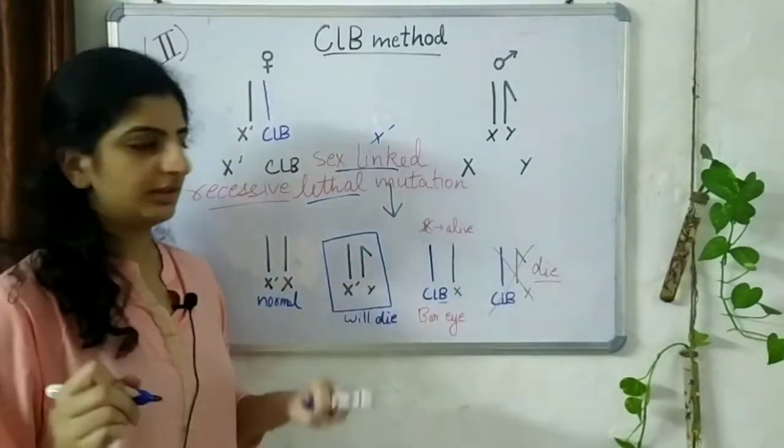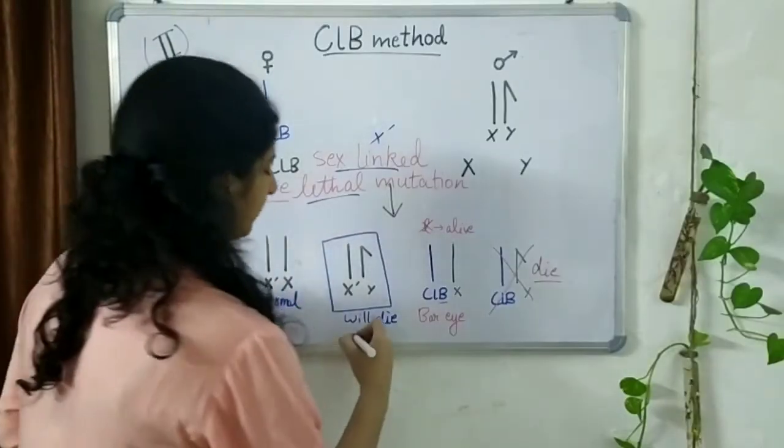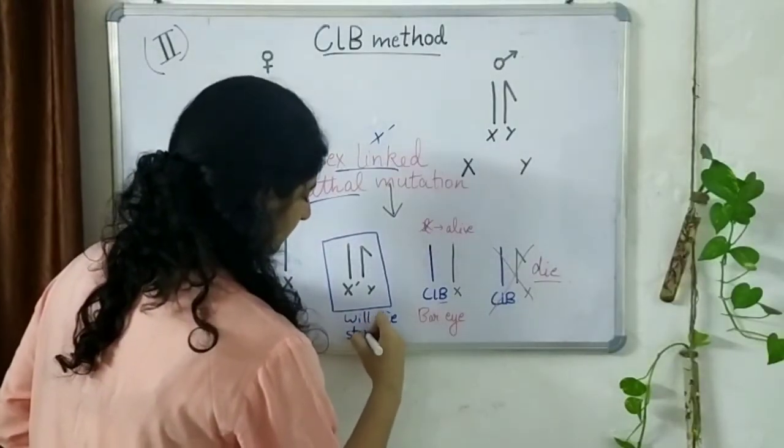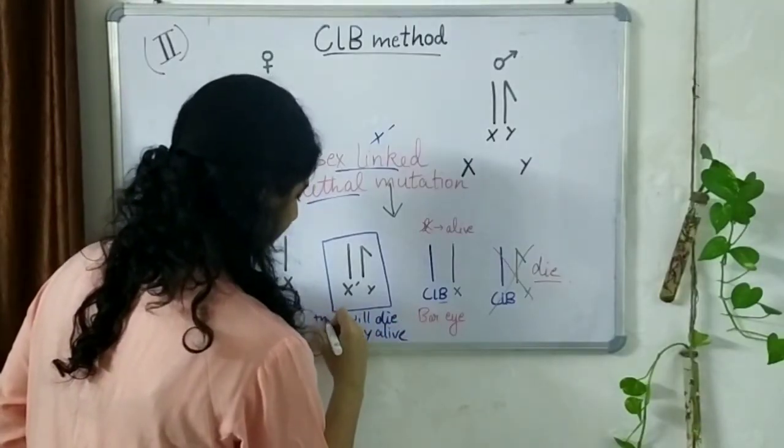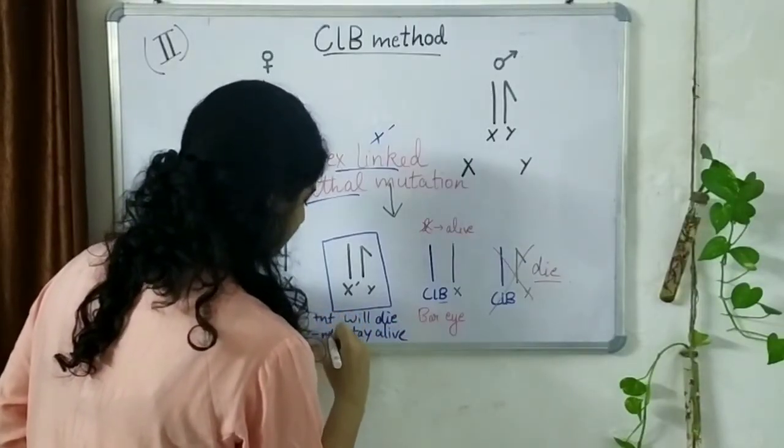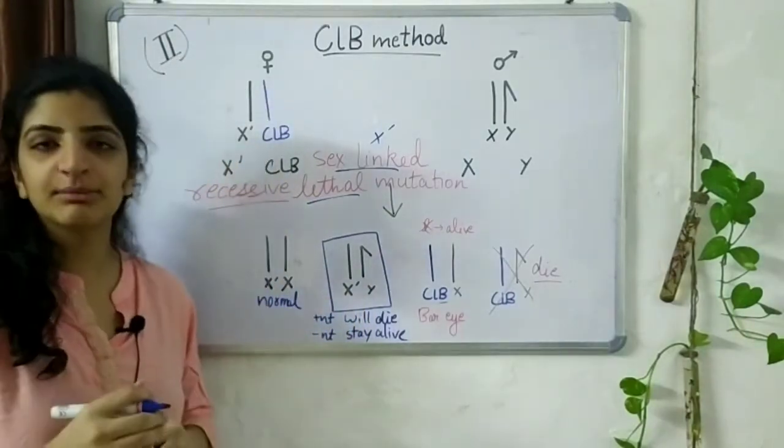However, if this X dash does not have this lethal mutation, this male will stay alive and this is the end condition that we get in the CLB method.